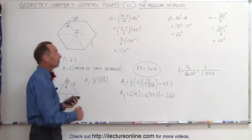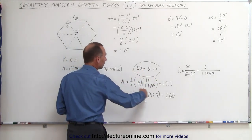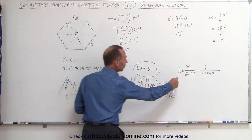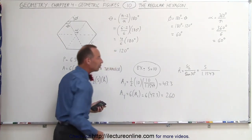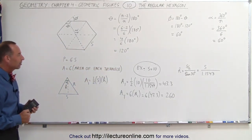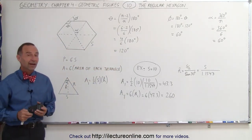So in this case, if S is equal to 10, we find the area of each triangle using this relationship between H and S, and then we multiply times 6 to find the area of the total regular hexagon. And that's how we do that.